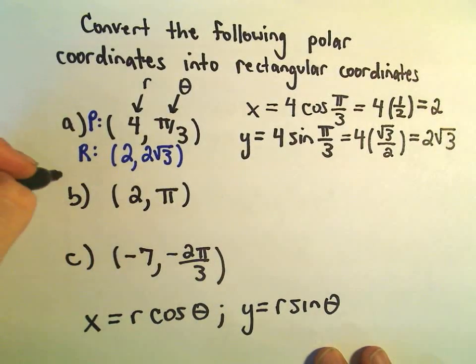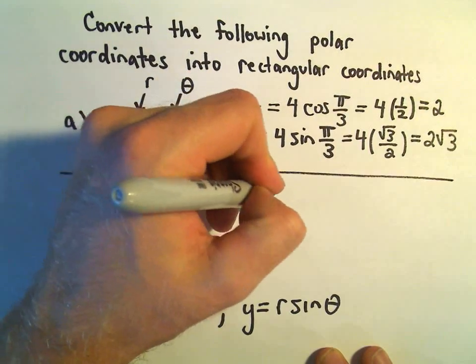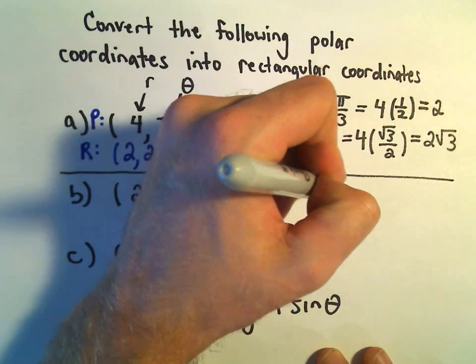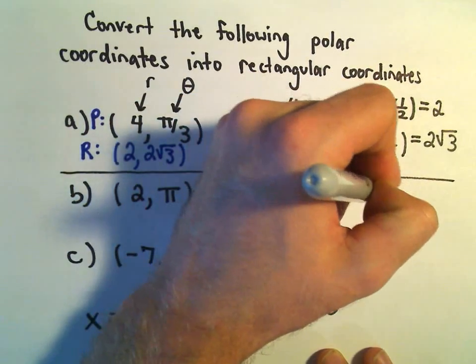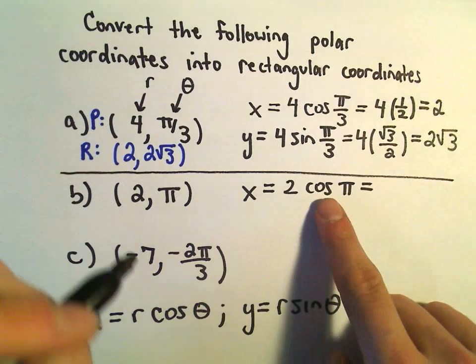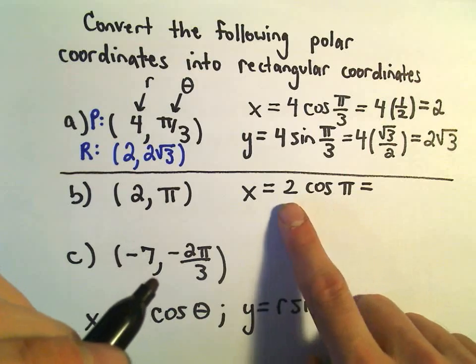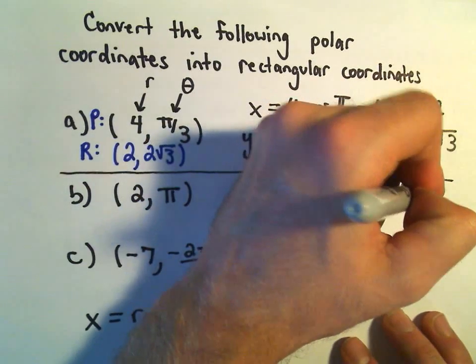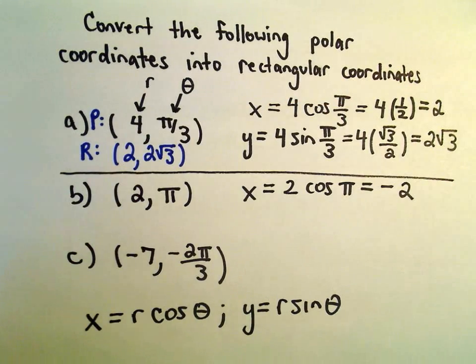Next one: (2, π). So x would just be 2 times cosine of pi. Cosine of pi, though, is negative 1. So we'll get 2 times negative 1, or negative 2.